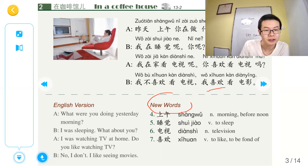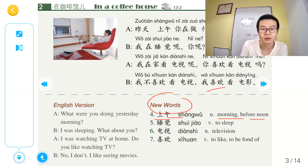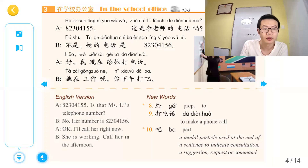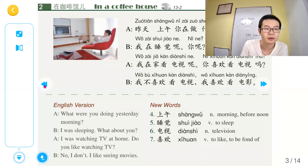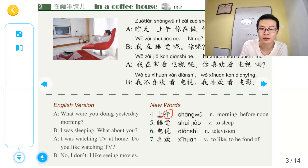我们首先来看到new words。上午 — morning, before noon. 上午是noon之前，也就是morning. 睡觉 — to sleep. 电视 — television. 喜欢 — to like, to be fond of.